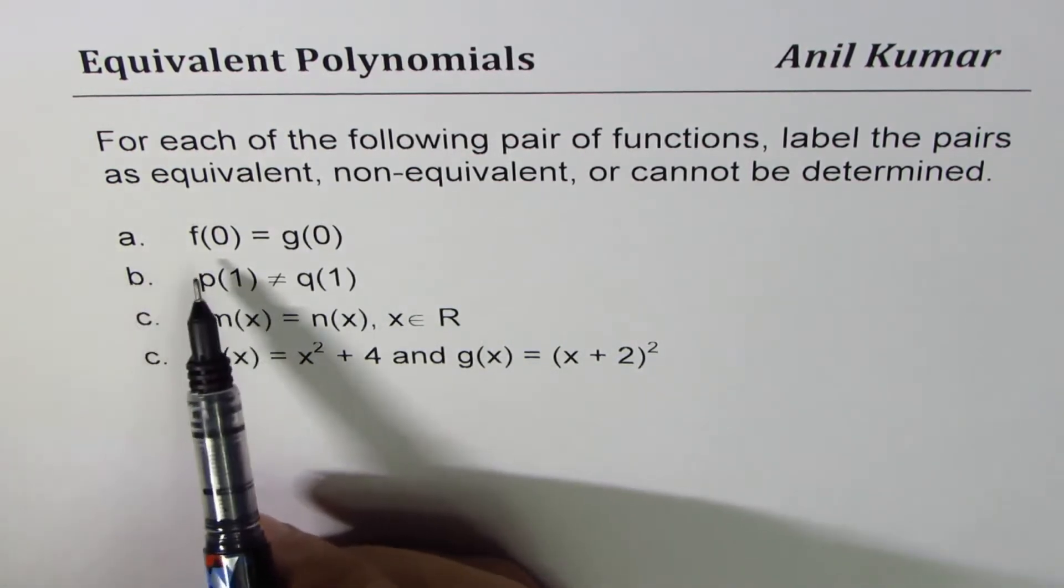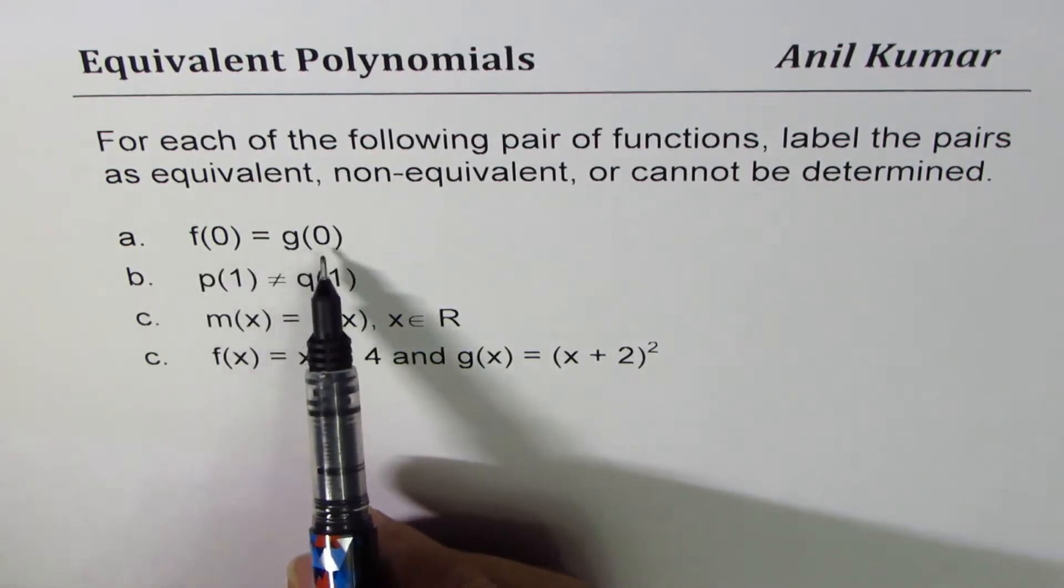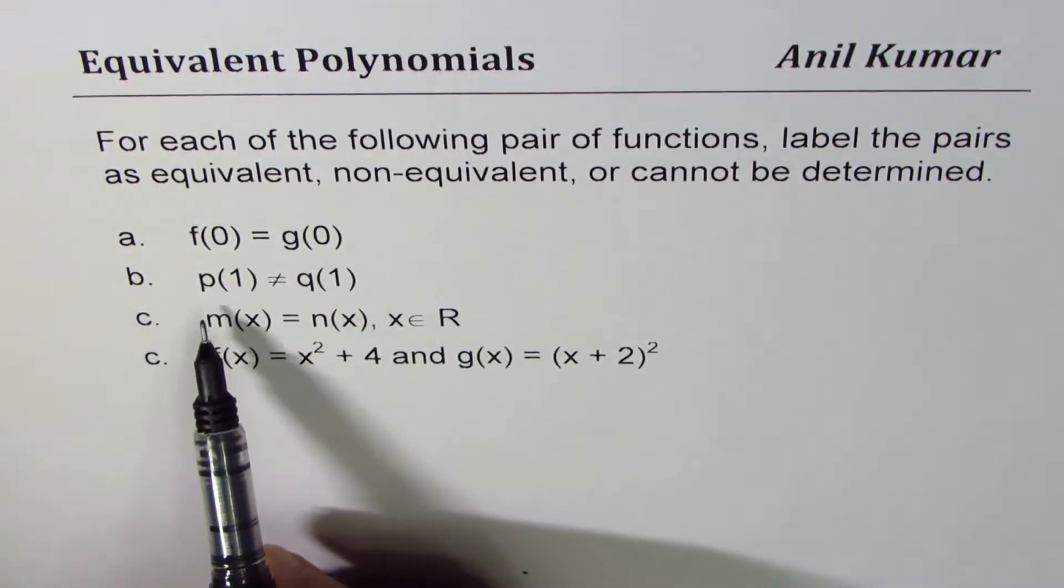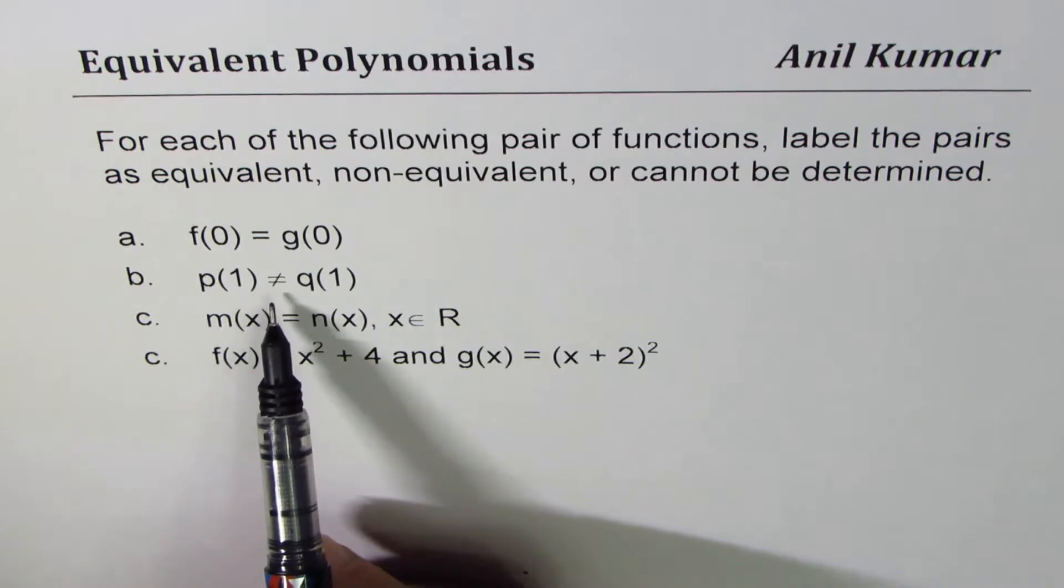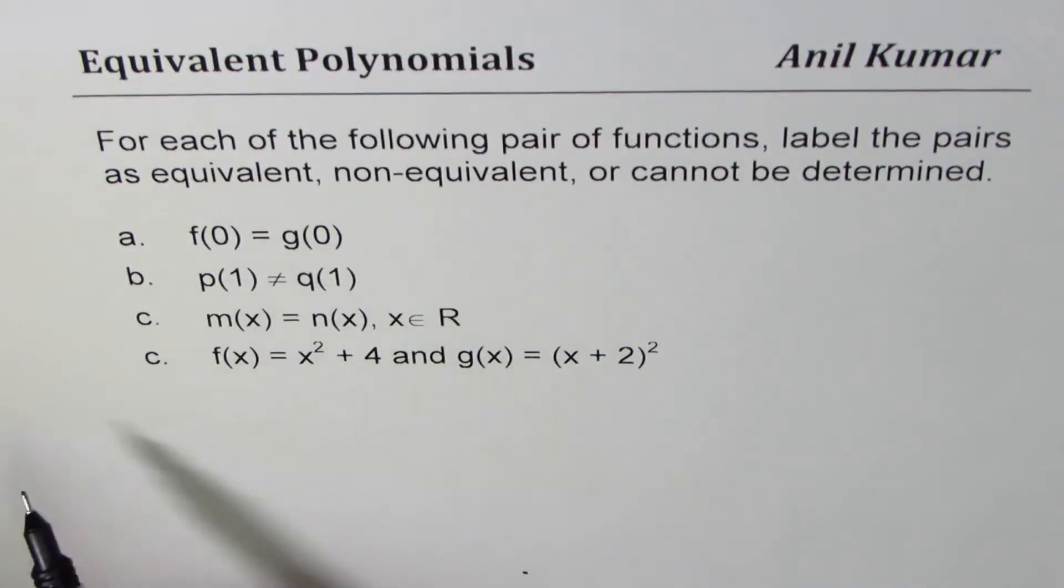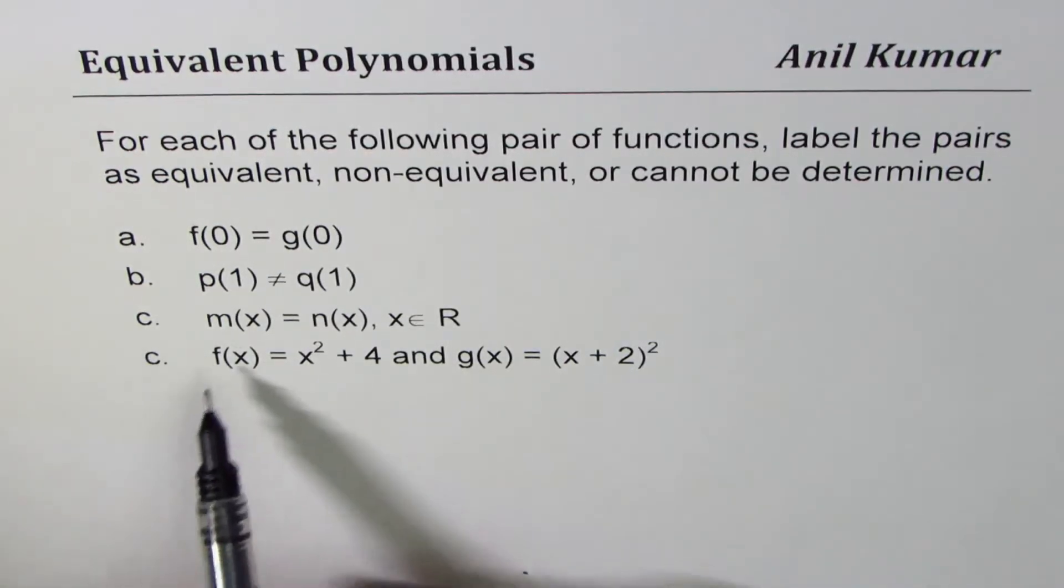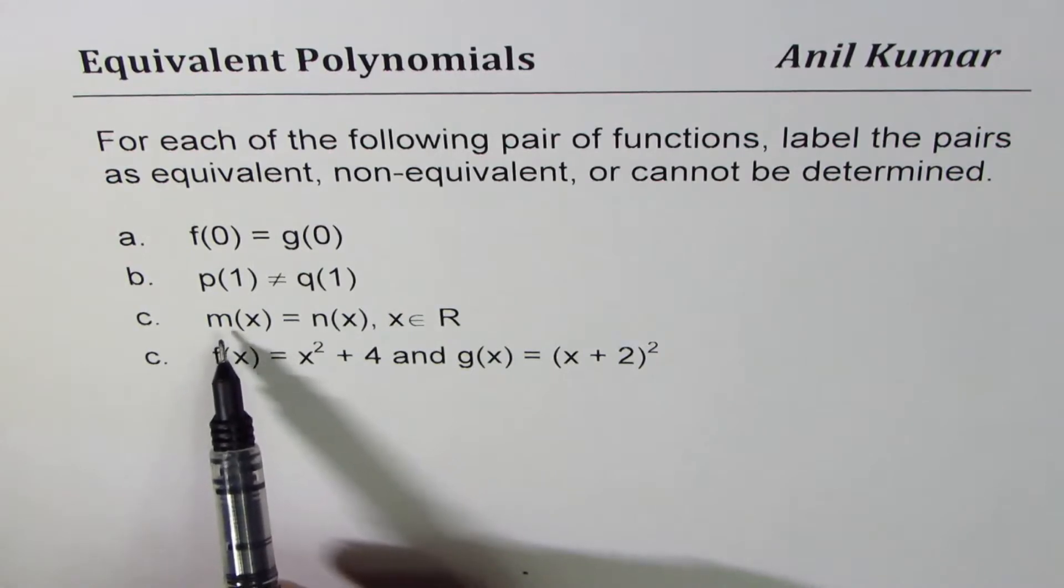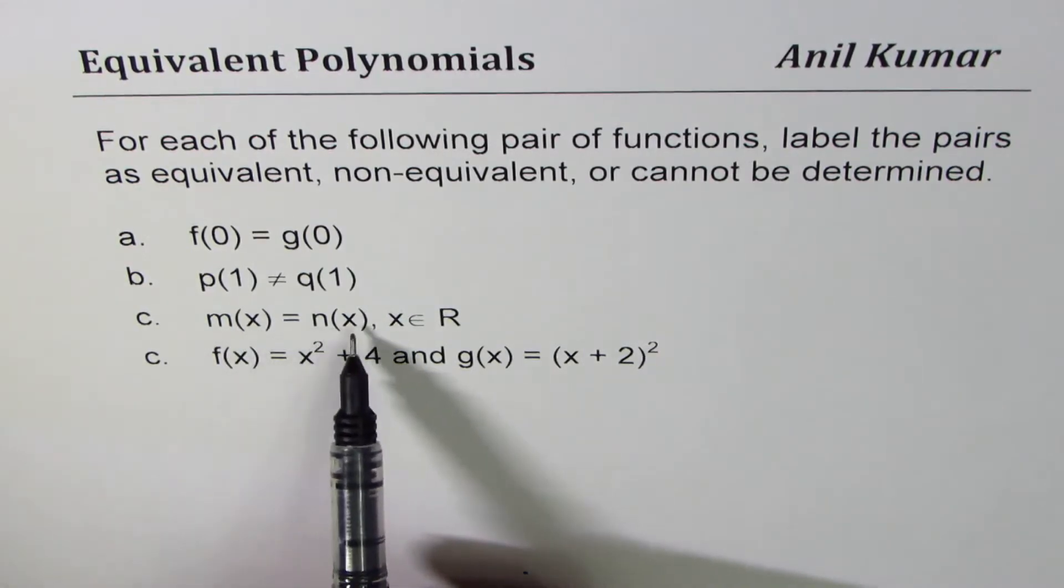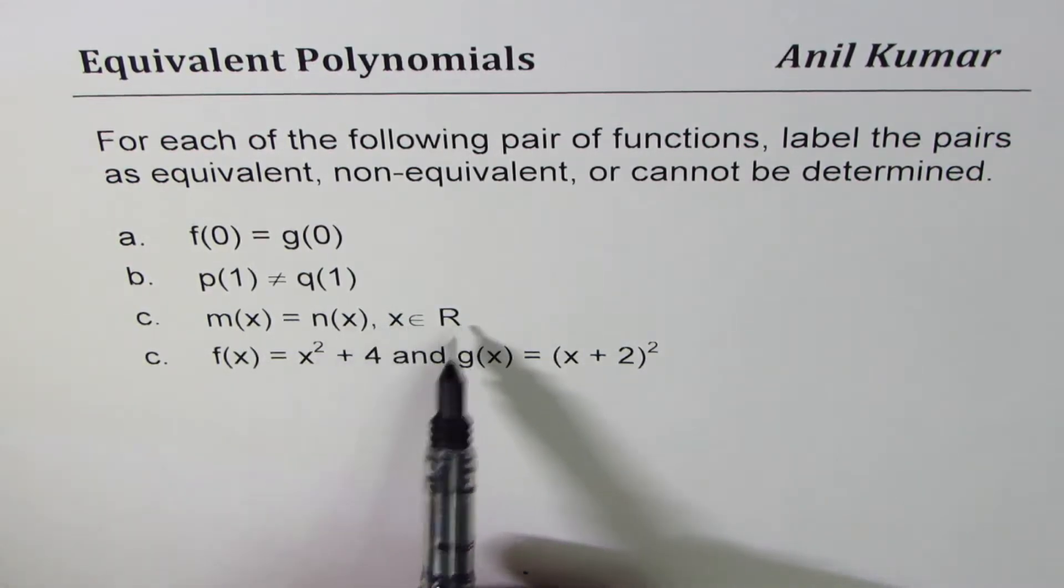So the first set is f(0) equals g(0). The second is p(1) is not equal to q(1), so these are all functions. And c is the function m(x) is equal to n(x) for x belonging to real numbers.